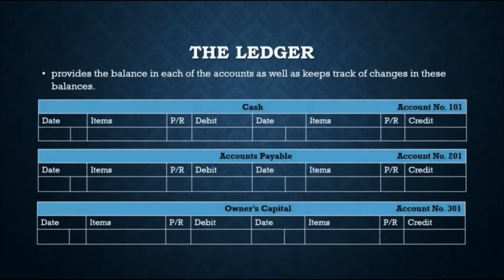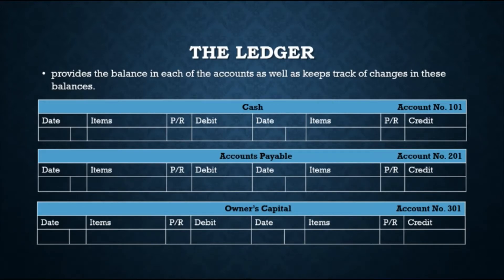The entire group of accounts maintained by a company is called the ledger. The ledger shows the balance in each of the accounts as well as the changes in those balances. If the journal is called the book of original entry, the ledger is called the book of final entry. Companies usually arrange the ledger in the sequence in which they present accounts in the financial statements — starting with balance sheet accounts: assets, liabilities, owner's capital, drawings, revenues, and expenses. Each account is numbered for easier identification.